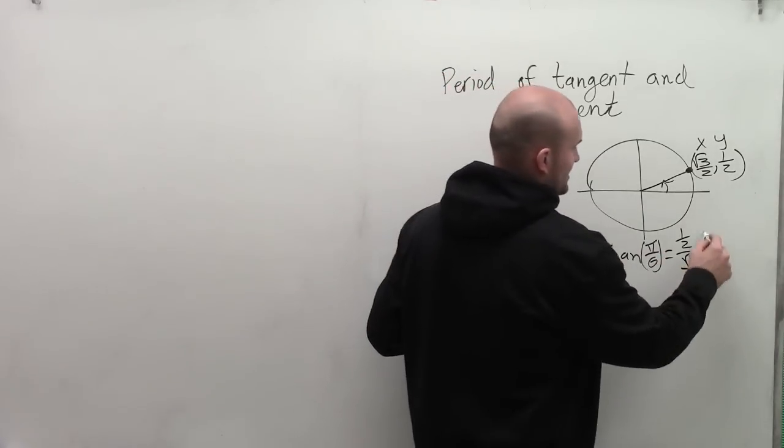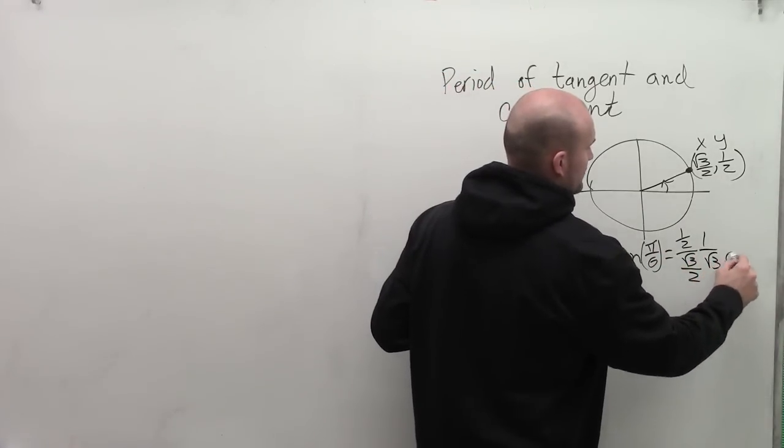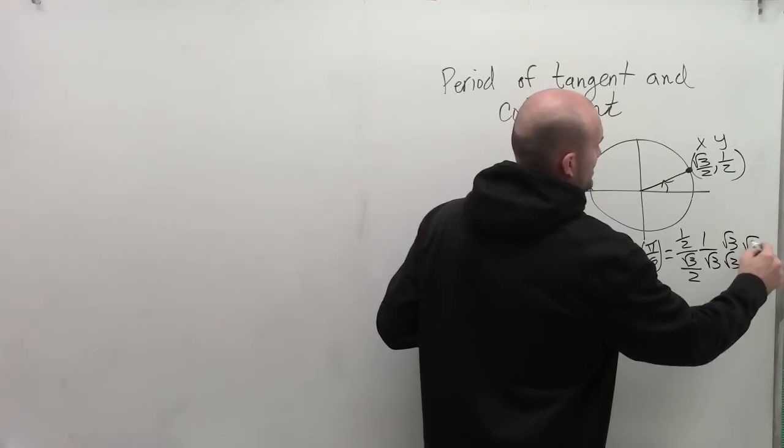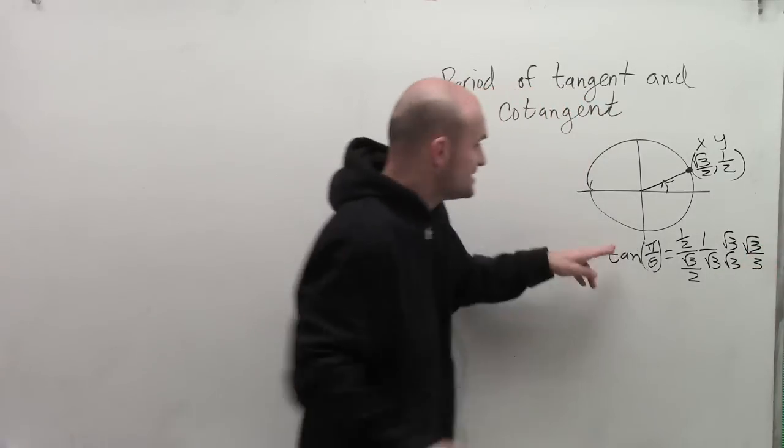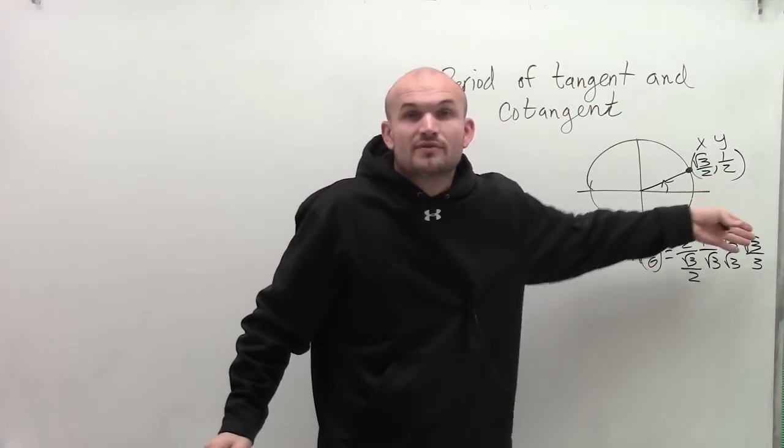And therefore, when simplifying this, I get 1 over radical 3, rationalize the denominator. I get square root of 3 divided by 3. That means the tangent of pi over 6 equals square root of 3 over 3.